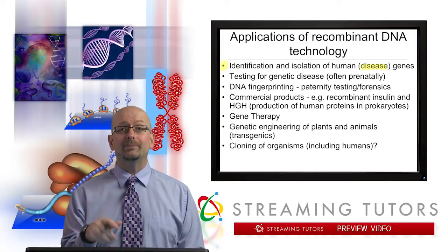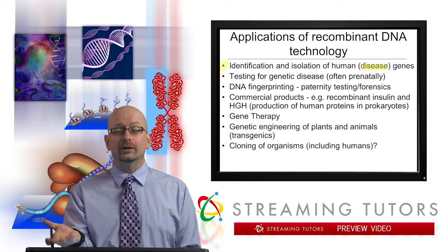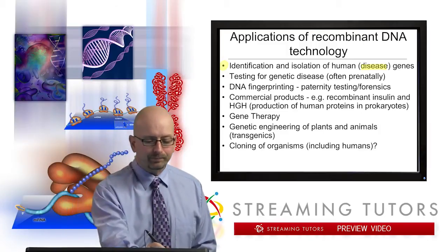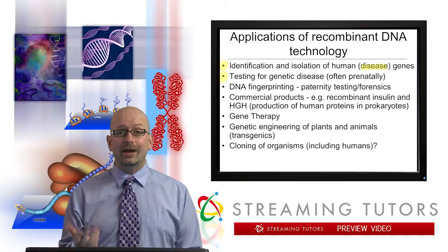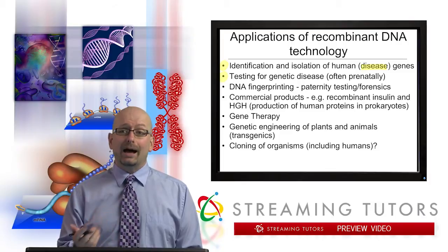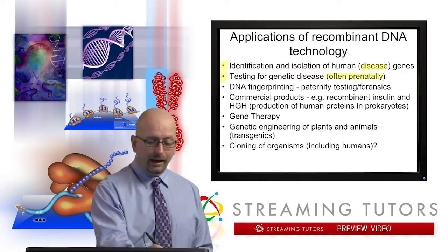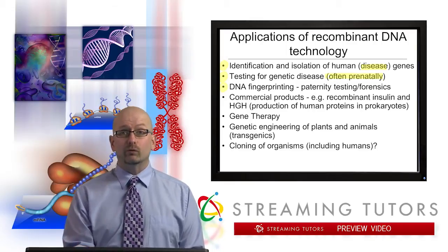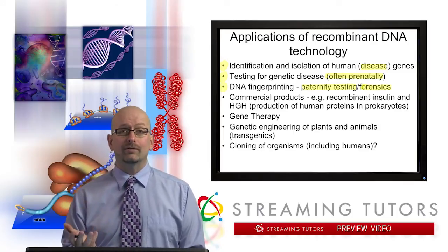A lot of times, as we're going to see, we learn about the normal function of genes by looking at the disease gene. We say, this person has this problem — oh, look, this gene is altered. What must the normal version of that gene do? Once we have that information, we can test for genetic diseases. I wrote prenatally here — sometimes that's desirable, sometimes later in life it's desirable. A big one that you've heard about has to do with so-called DNA fingerprinting, which can be used for a variety of things.